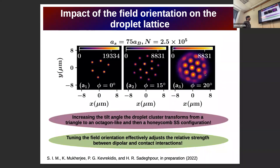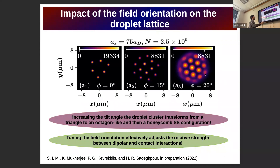As I mentioned, by tuning the angle of the magnetic field we can effectively manipulate the magnitude and the sign of the dipole-dipole interaction. Here I depict three different cases with the same particle number and S-wave interaction, where we can see that we can, for instance, transform the system from a triangular configuration all the way to the honeycomb configuration of droplets.